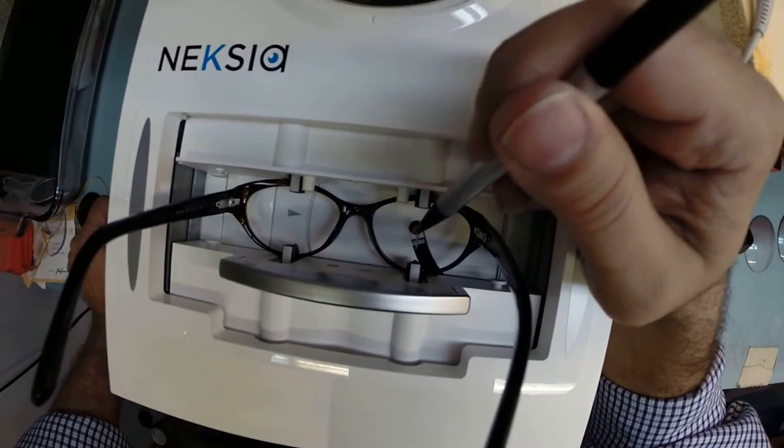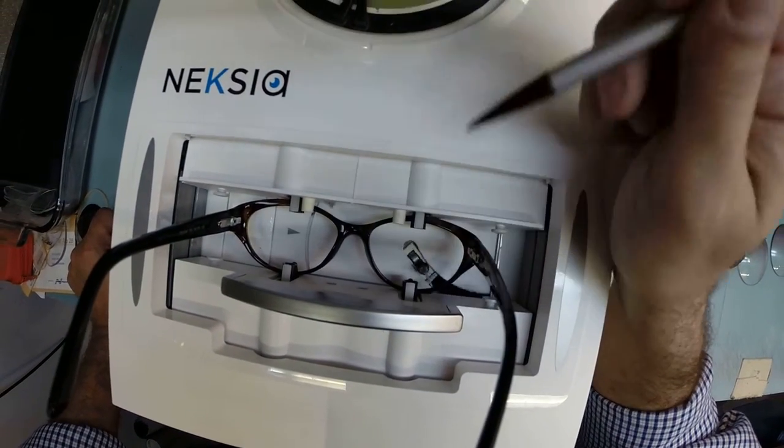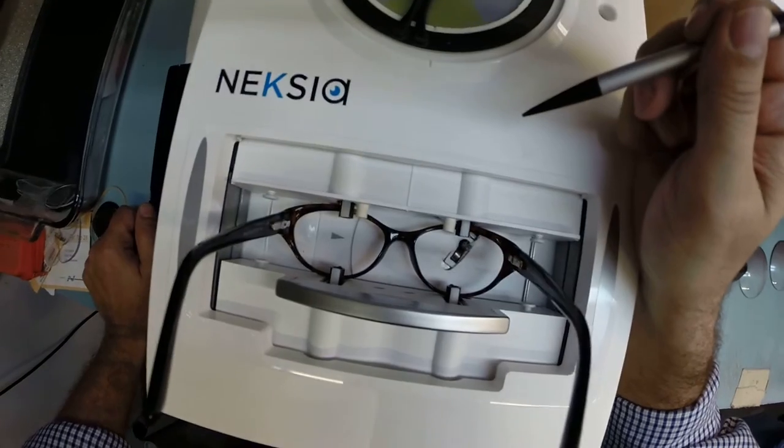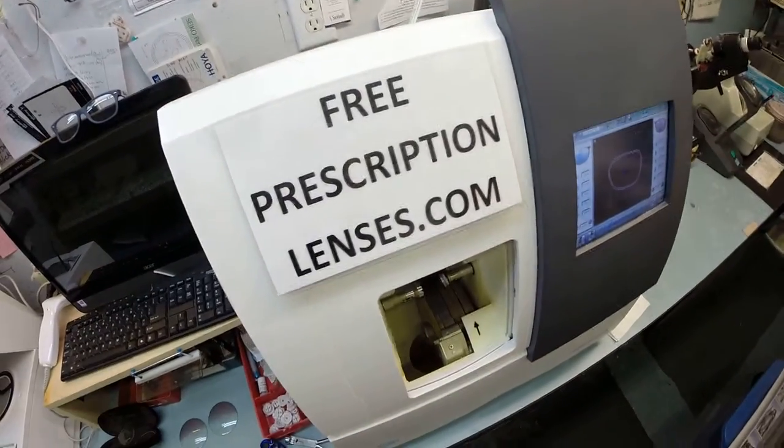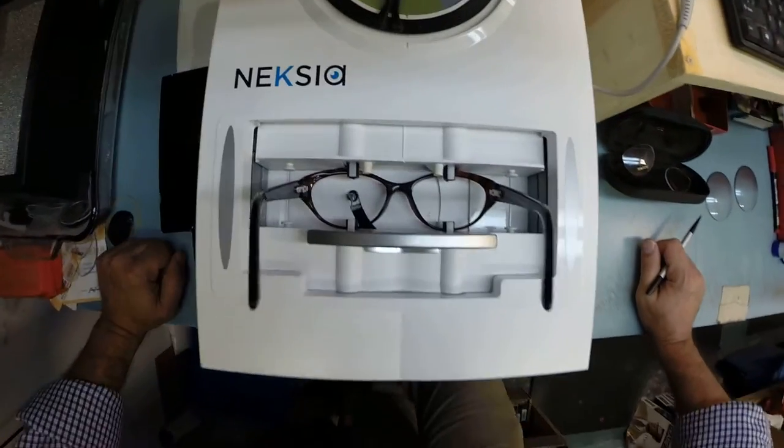I'm going to take your frame, put it into the tracing element of my edger, and hit trace. The clamps close, and then this little stylus is going to pop up and trace the shape of the right lens before moving over and tracing the shape of the left.